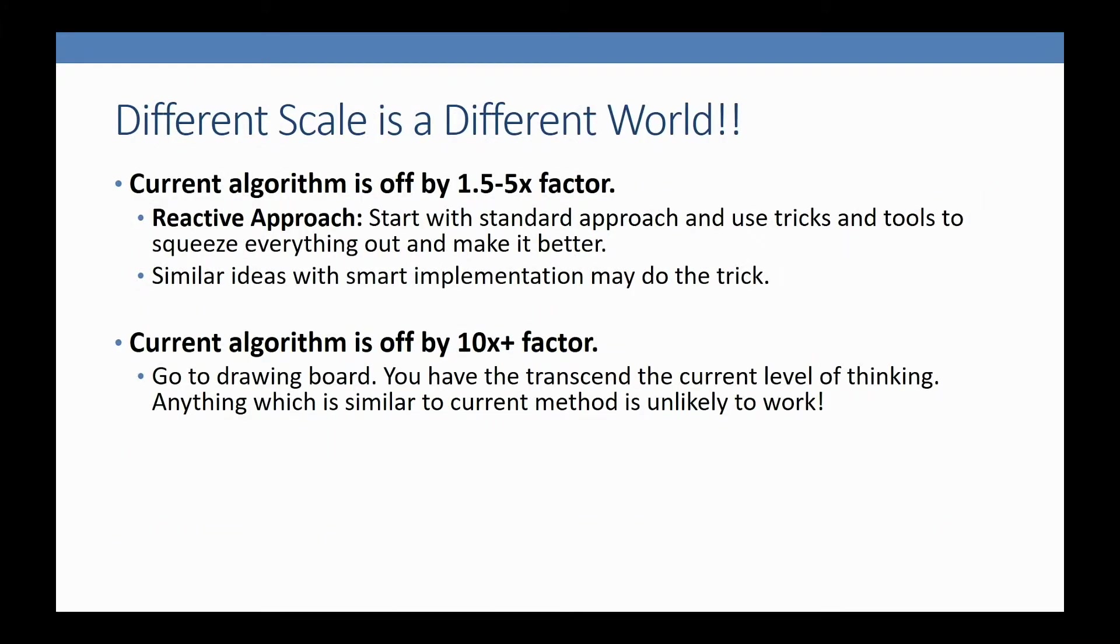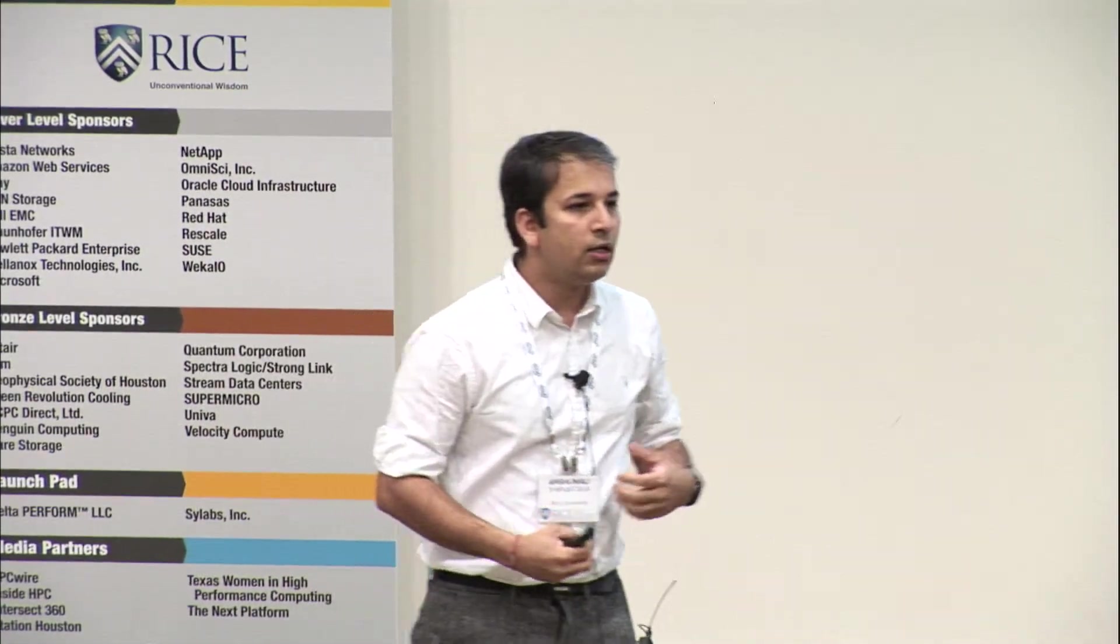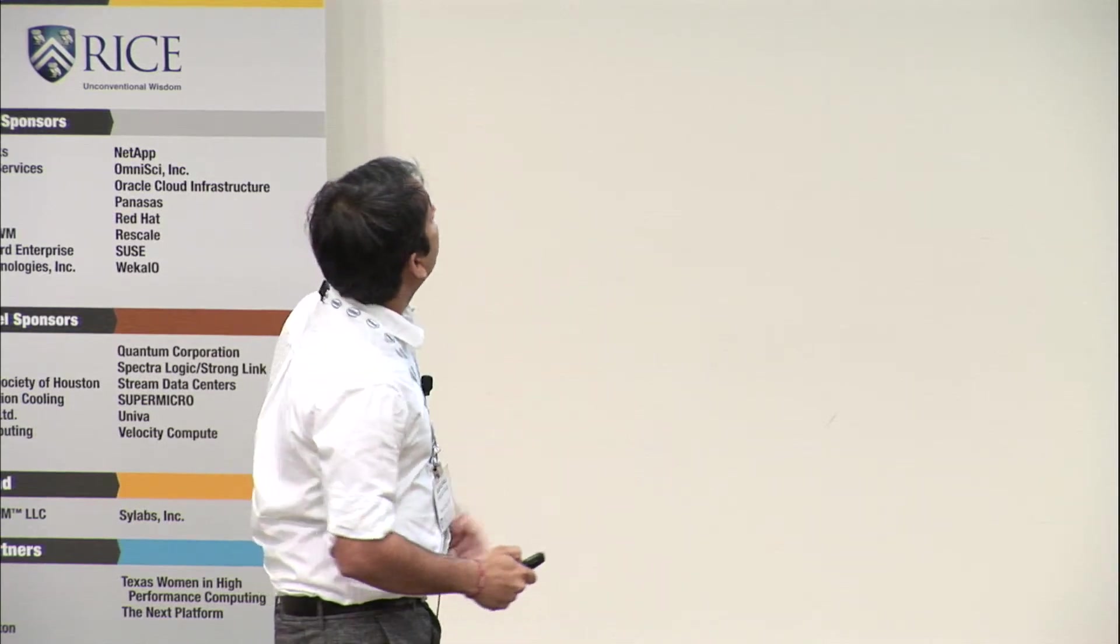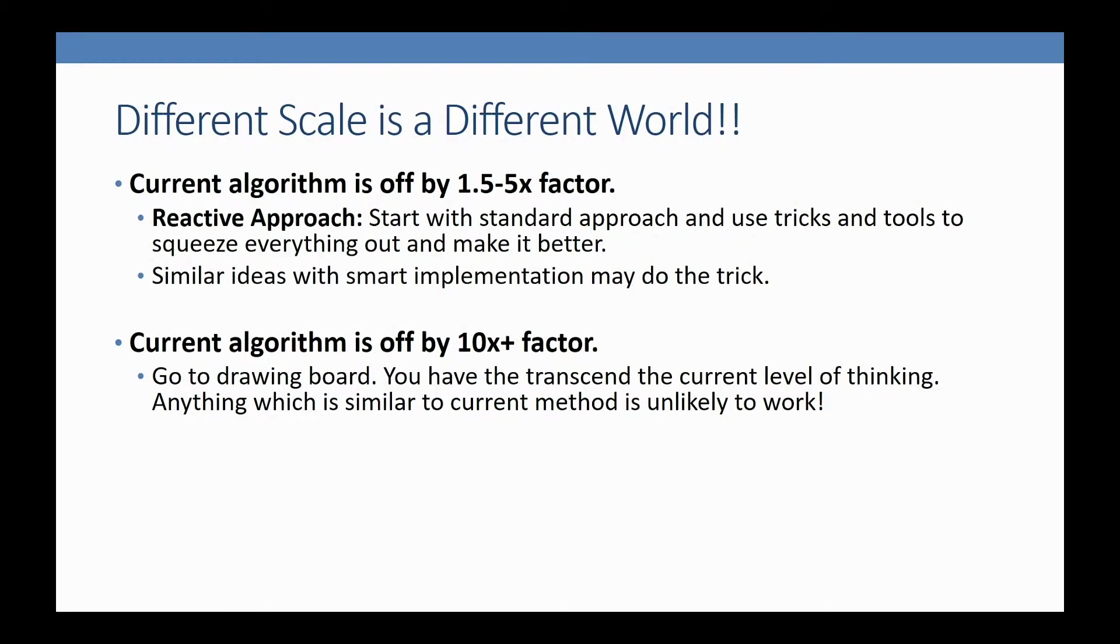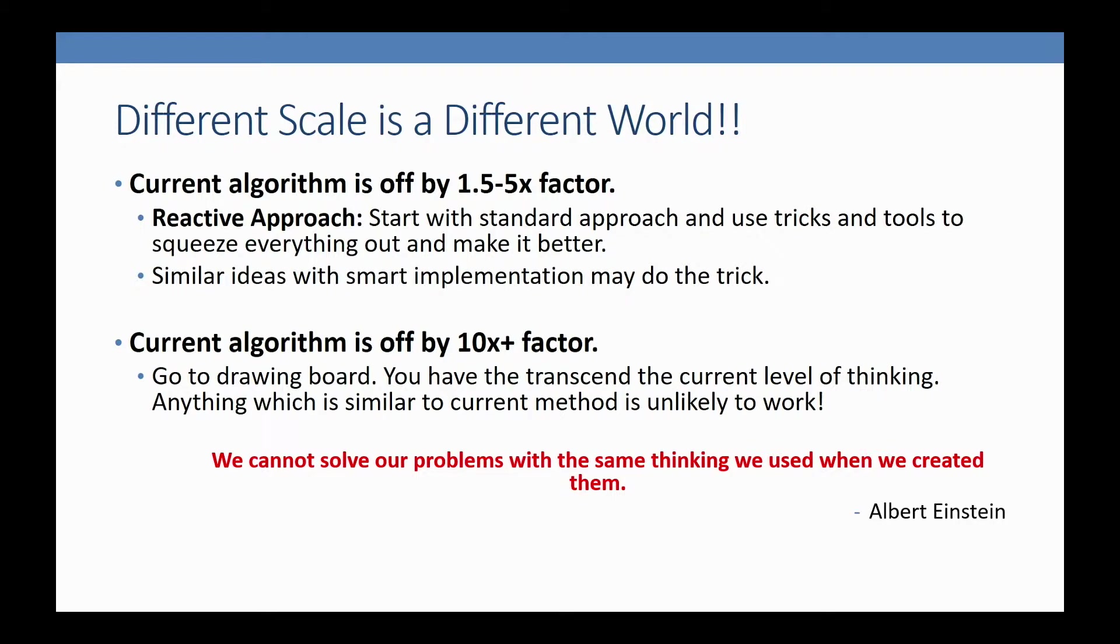I'll show you that there are very smart algorithms that can go very far if you combine them with simple parallelism. When we want to improve something by a factor of 1.5 to 5x, a reactive approach works—start with something that works and squeeze everything out. But if I want a 10x factor, we have to think in a different domain, philosophically different. An algorithm philosophically similar to what we know is unlikely to give 10x. As Einstein said: we cannot solve our problems with the same thinking we used when we created them.